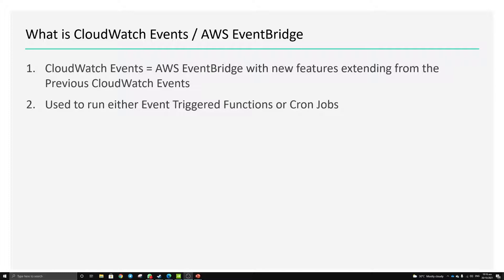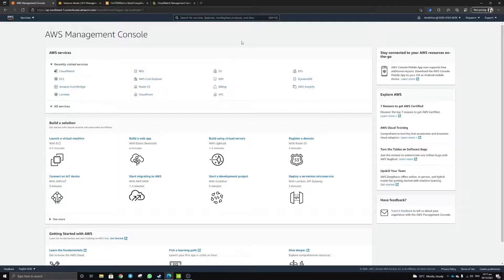So what is AWS EventBridge? It's been renamed from the previously known CloudWatch Events, but they have further built on this feature to extend to partner companies. If you connect to some third-party application APIs, they are able to trigger and send JSON-style information to trigger their functions.